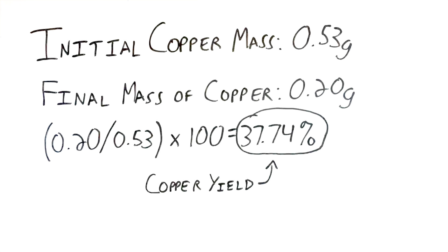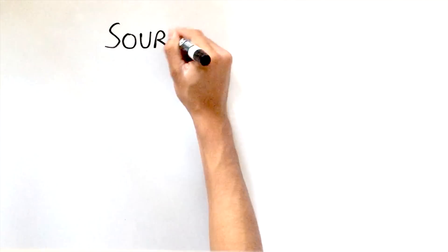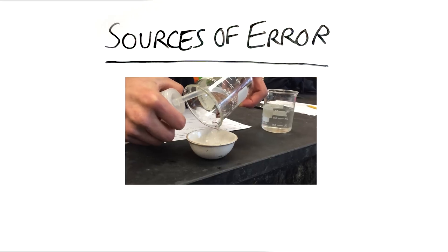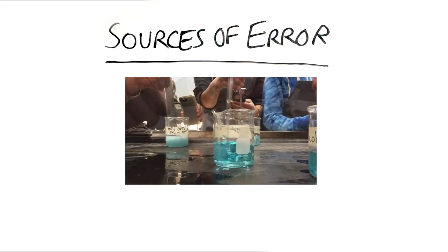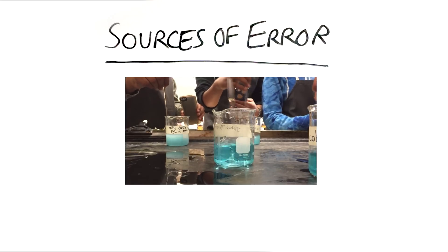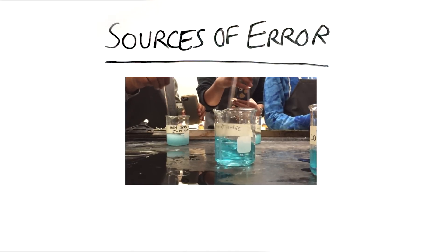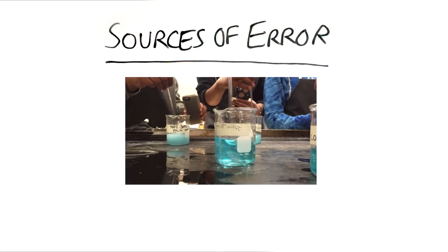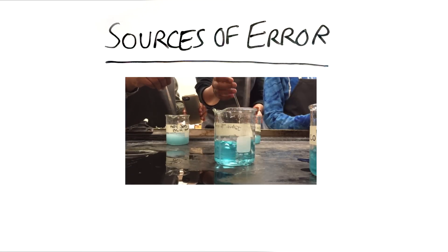So, the rest of the copper went somewhere else. One potential source of error is lost copper during decantation. A second is that if the aluminum was not stirred long enough, not all copper precipitate may have formed. In both instances, there would be less solid copper remaining at the end of the experiment.